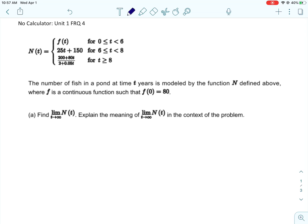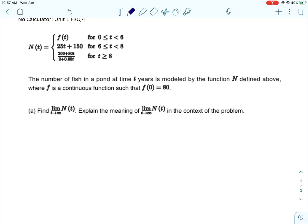All right, this is our last free response question for unit 1, and then we'll move on to unit 2, which is all about derivatives. I'm going to use derivatives a little bit in this one because now that we know it, it makes it easier. I like this problem because this function means something. N is the number of fish in a pond at time t years. We know f is continuous, which is going to be important in a minute, and we know that f(0) = 80.